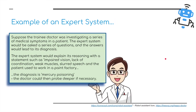Here's an example of an expert system. Suppose we have a trainee doctor investigating a series of medical symptoms in a patient. The expert system would be asked a series of questions, and the answers would lead to a diagnosis. The expert system would explain its reasoning with a statement such as: impaired vision, lack of coordination, weak muscles, slurred speech, and the patient used to work in a paint factory. The diagnosis might be mercury poisoning. The doctor could then probe deeper, if necessary, to get a more detailed, more specific result.